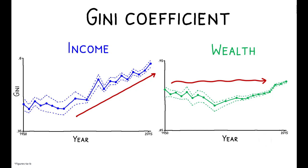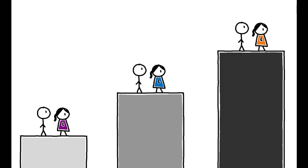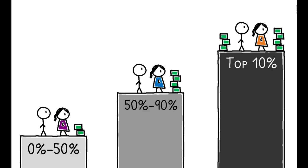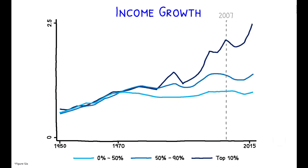To illustrate these differences more starkly, the authors separate households into three groups based on their location in the wealth distribution. For each group, they plot the trajectory of income and wealth growth over this period. Looking first at income growth, we see the components fueling the rise in income inequality. While the incomes of households in the top 10% of the wealth distribution doubled between 1971 and 2007, income growth was low for those in the bottom 90% and essentially stagnant for those in the bottom 50%.